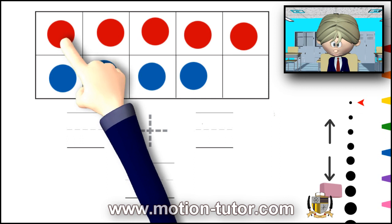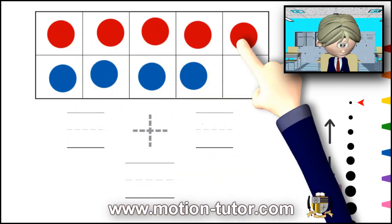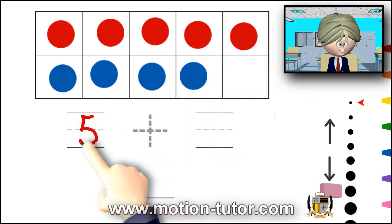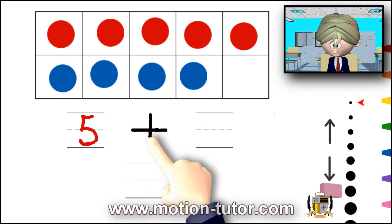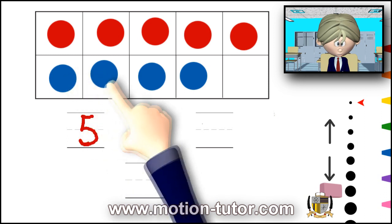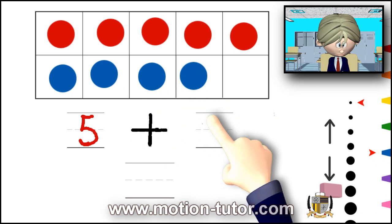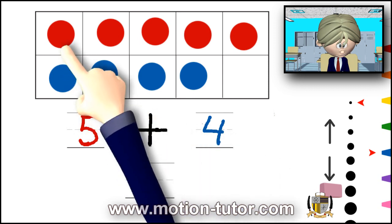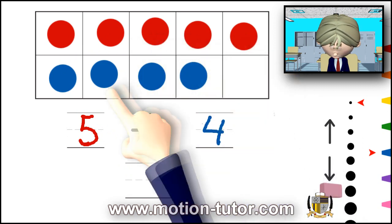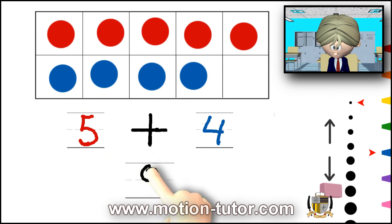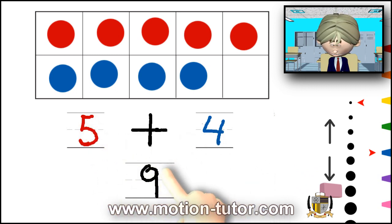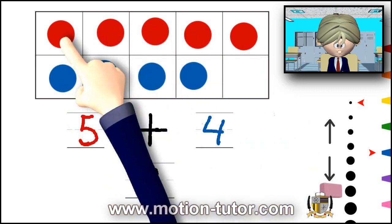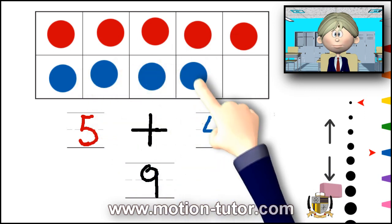We have how many reds? One, two, three, four, five reds. So it's five plus how many blues? One, two, three, four. And now what is the total? One, two, three, four, five, six, seven, eight, nine. So this is telling us that five plus four is nine. And this is true because we see it right here in this 10 frame. We have five up here and we have four down here. And together it's nine.